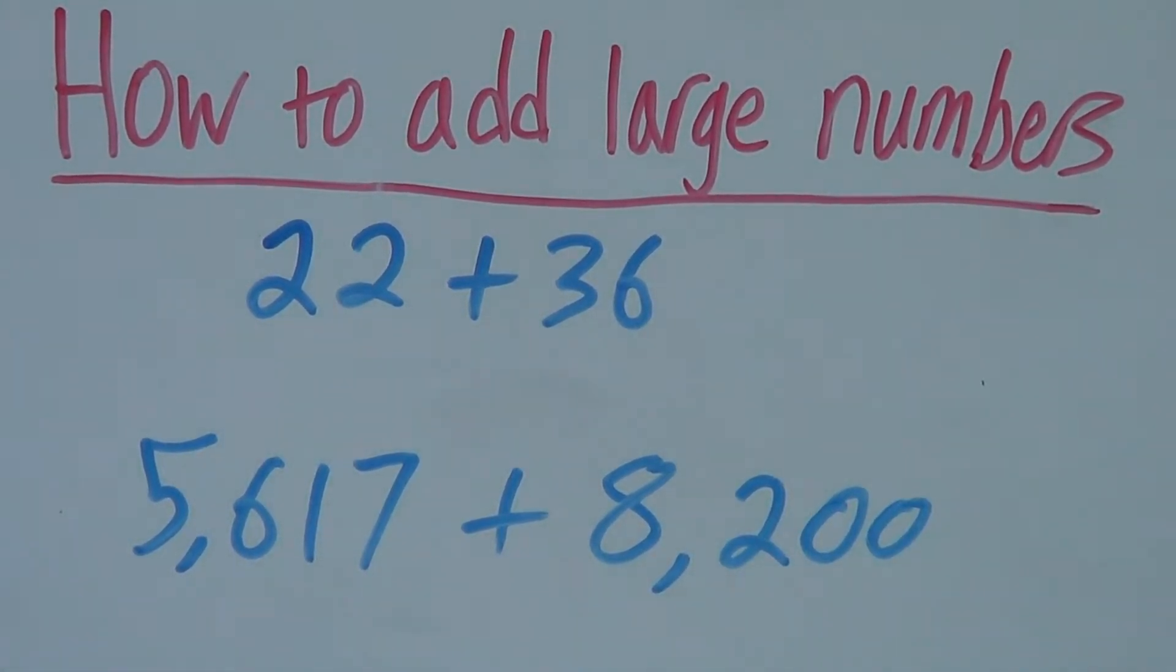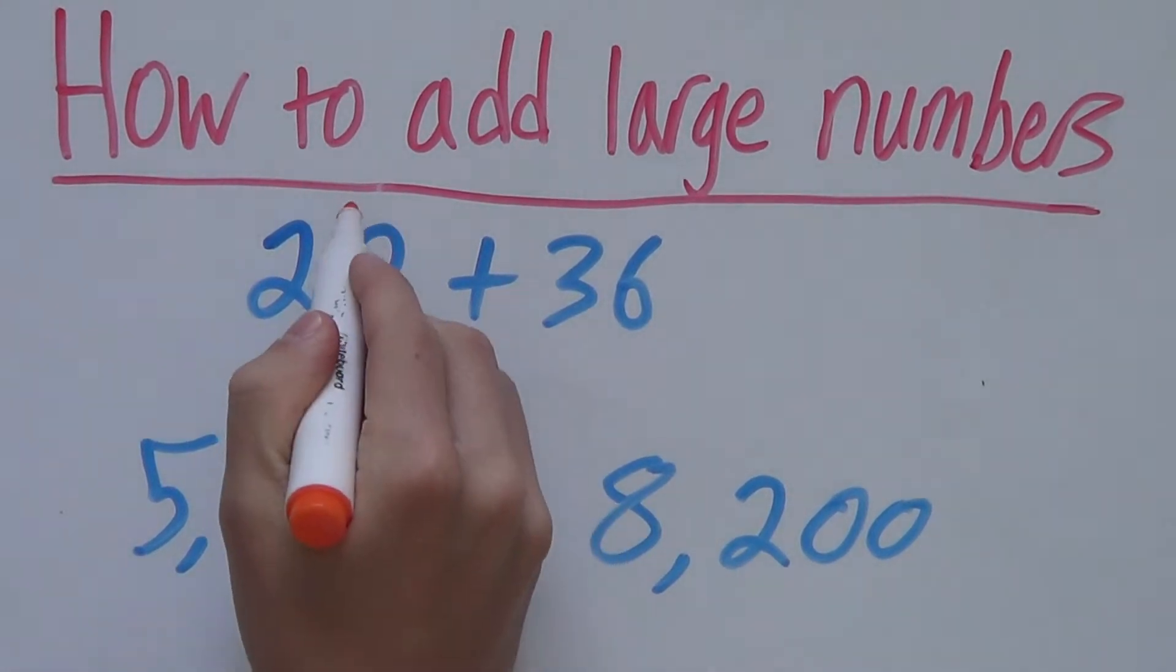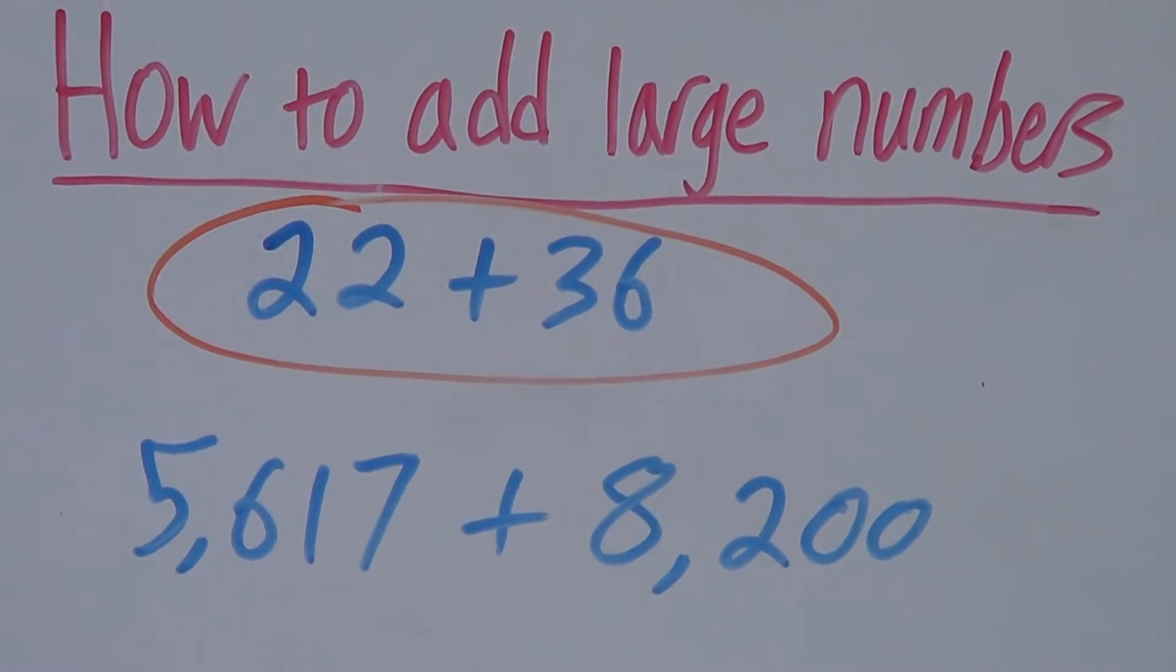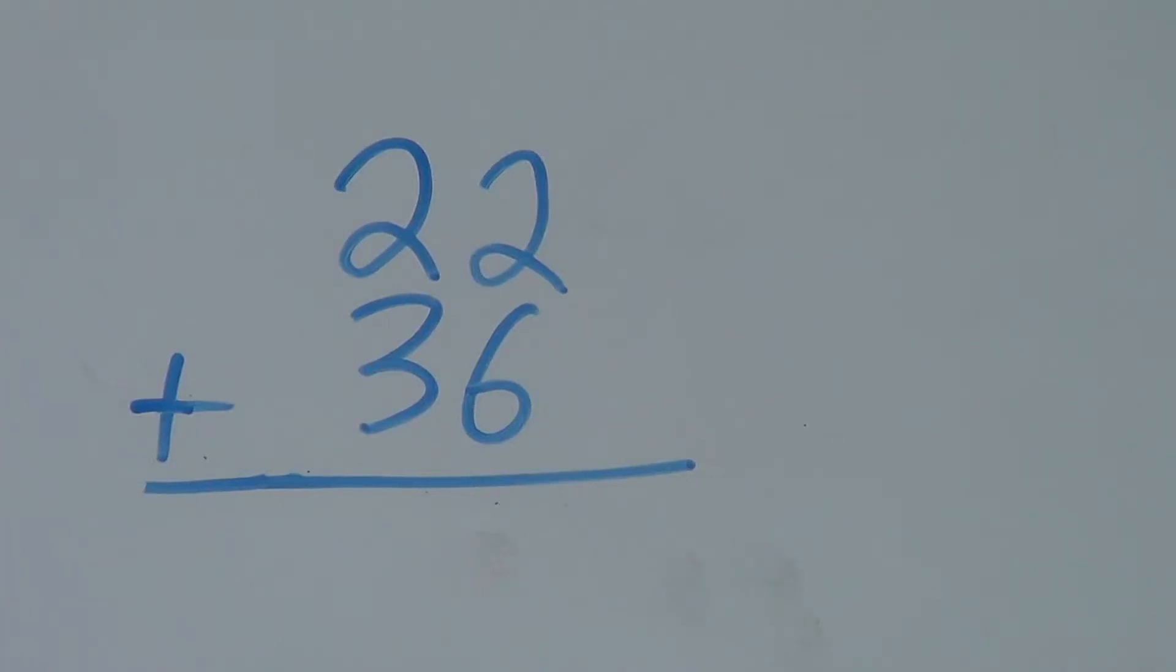But to start with, let's try adding 22 plus 36. So the first step is to set the numbers up so that they can be added. To set them up, you put one number on top of the other. So here we have 22 on top of 36.